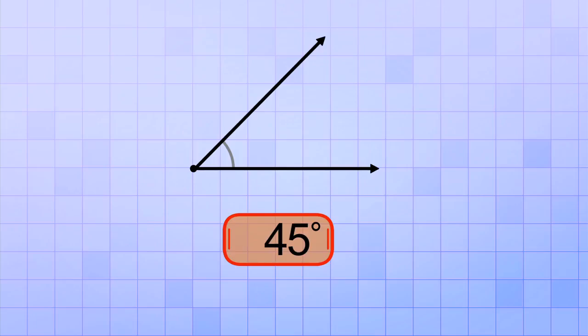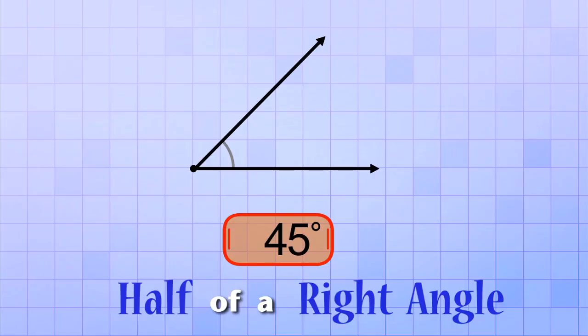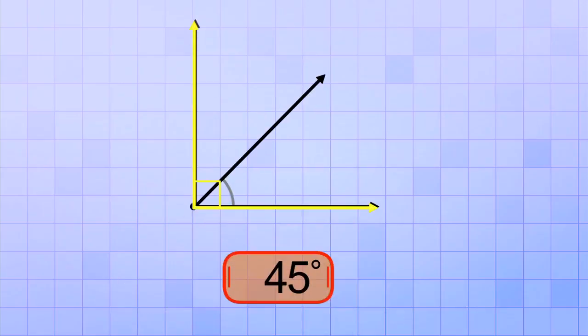Now 45 degrees is a special angle because it's exactly half of a right angle. If we draw a right angle in the same spot, you can see that our ray cuts it into two equal parts. So, if 45 degrees is half of a right angle, can you guess how many degrees a right angle is?